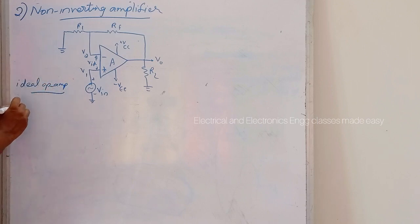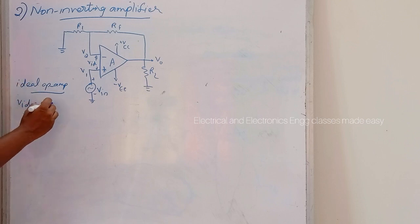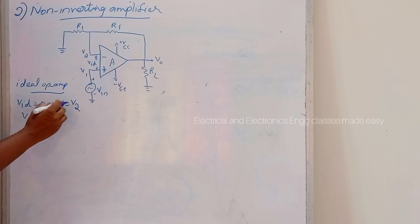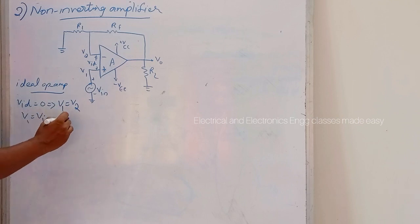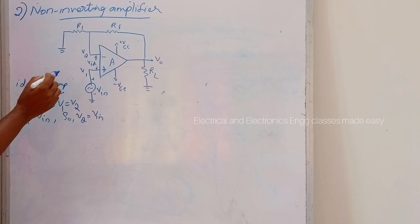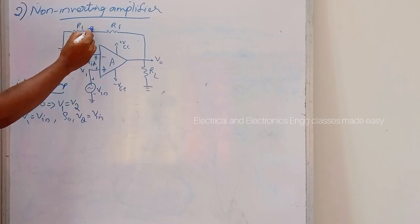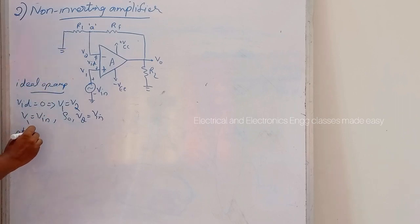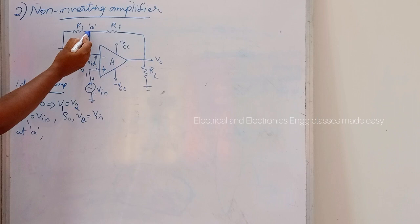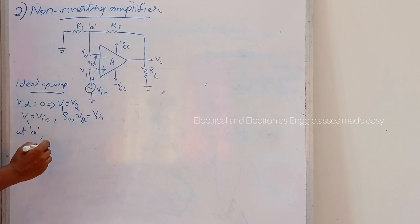Consider the ideal op-amp case. For ideal op-amp, VID equals zero, meaning V1 equals V2. Here V1 is given as Vin because the input voltage is applied to the non-inverting terminal, so V1 equals Vin. Therefore V2 must also equal Vin. Let this point be node A. The voltage at node A is V2, which equals Vin.